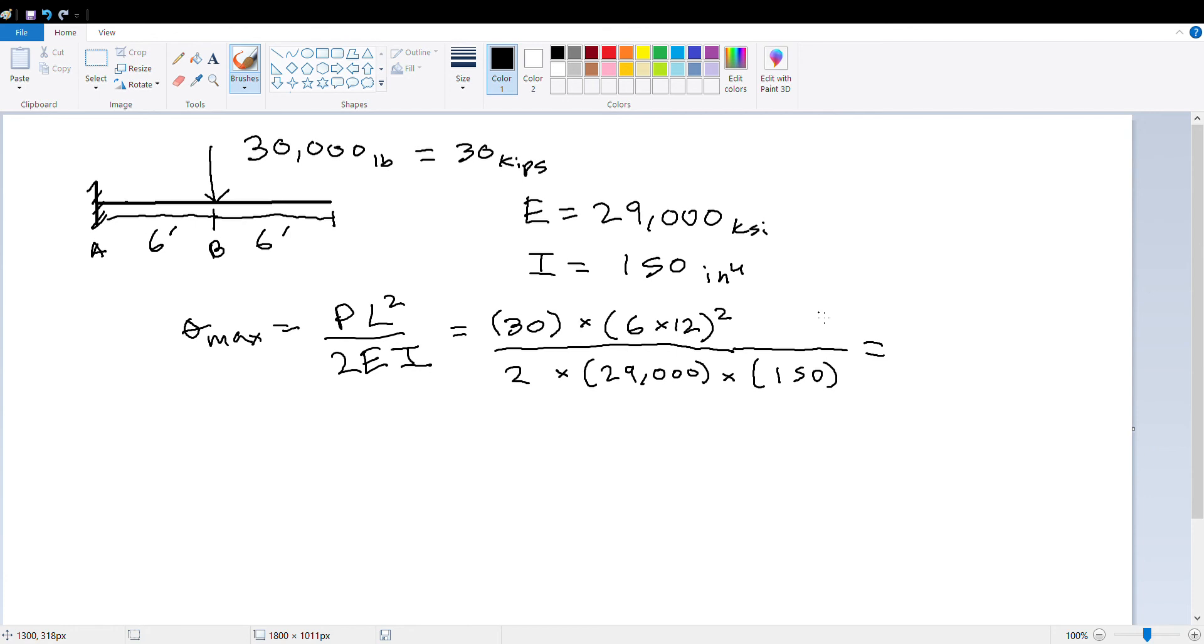So you have 30 times 6 times 12, we're gonna square that, divided by 2 times 29,000 times 150. What you are going to get is - well, hold on one second - 0.0179. And what is this unit? It's going to be in radians. And that's it, that's your answer.